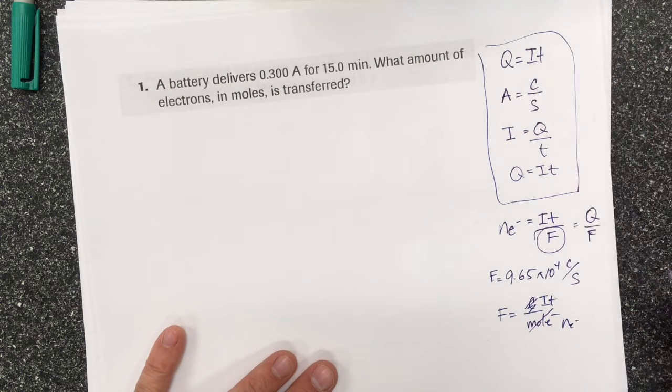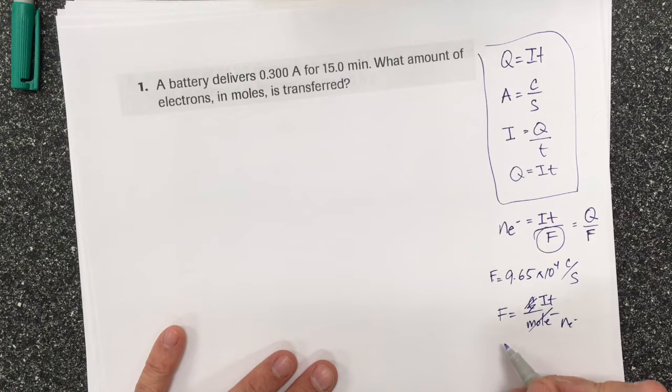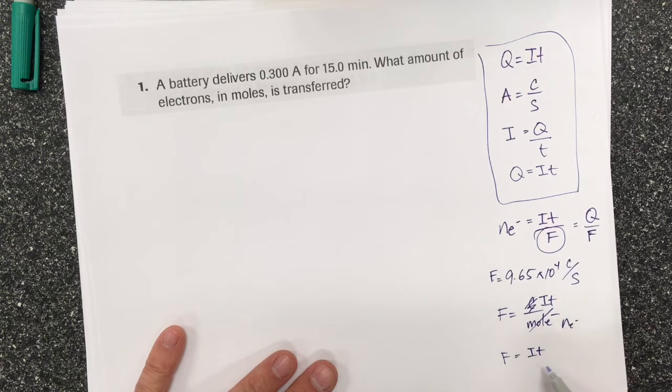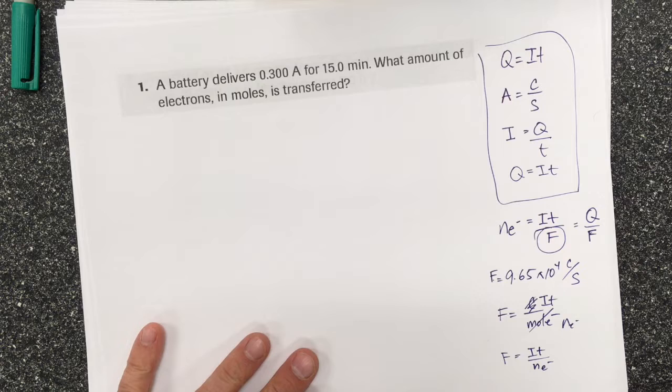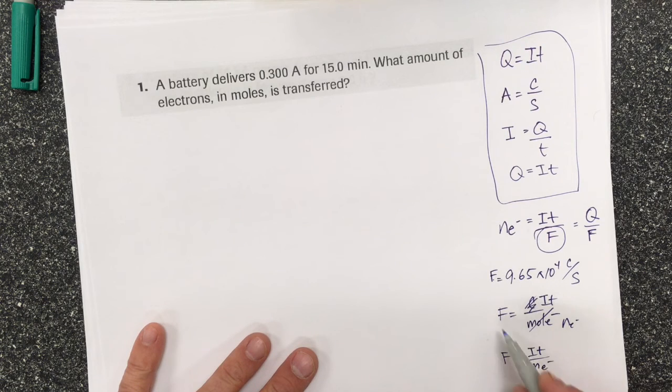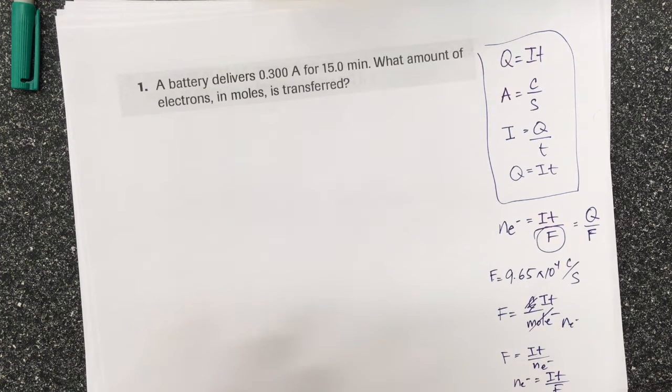Right, the charge is equal to that. So Faraday's constant equals current times time in seconds divided by the number of moles of electrons. Well if we rearrange that we get to Faraday's law. We can find that the number of moles of electrons equals I T over Faraday's constant.